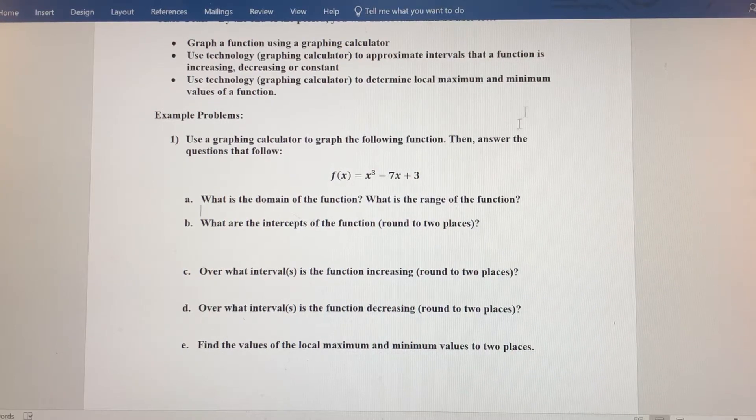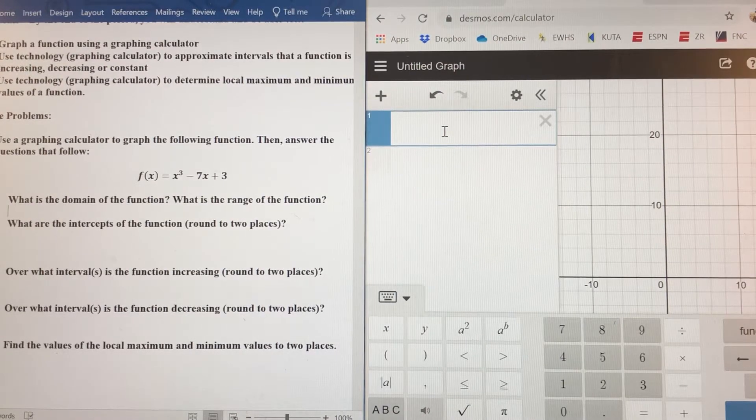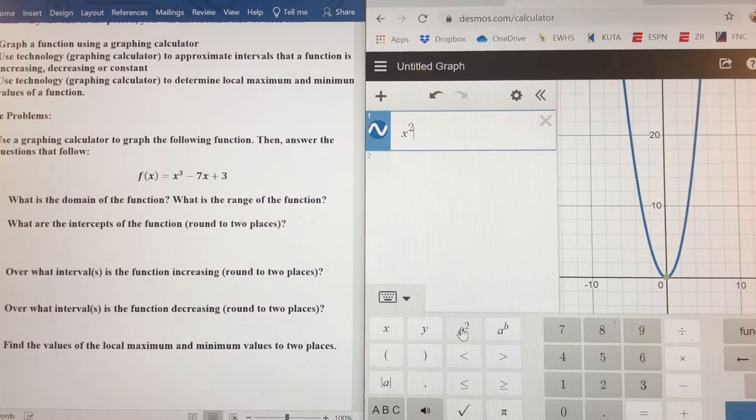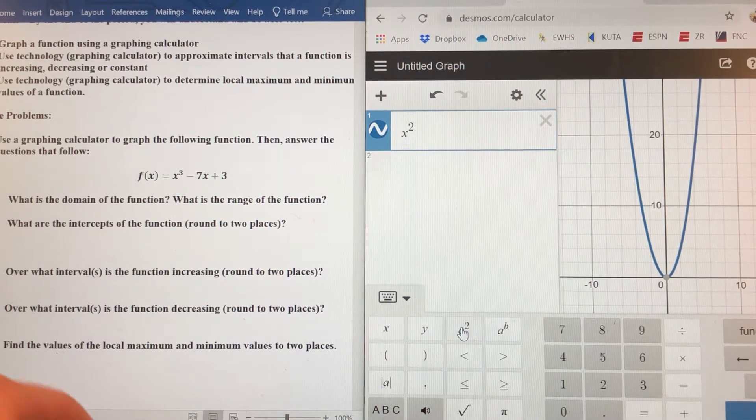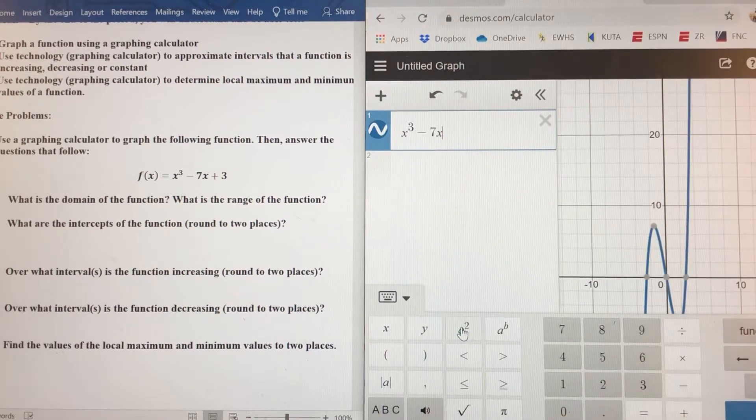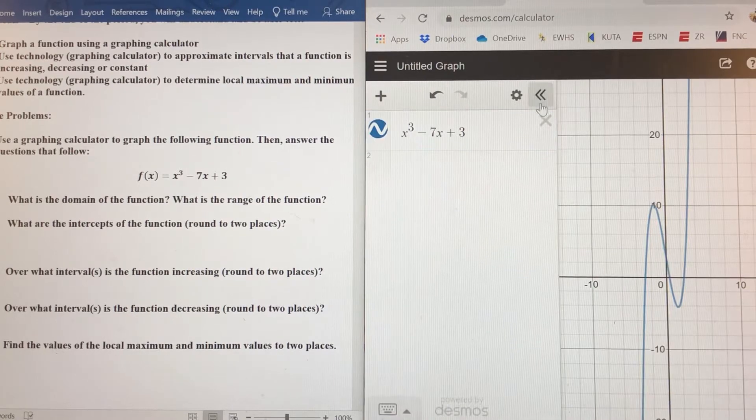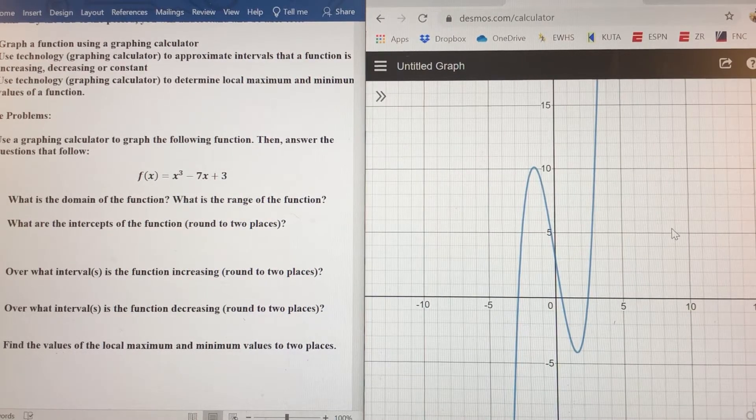So let's go ahead and go to desmos.com here. I'm going to put that function in. So we've got x cubed. Let me make that an x cubed. Then we've got minus 7x plus 3. So you can see the function there. Let me get out of this. And you can see the function.